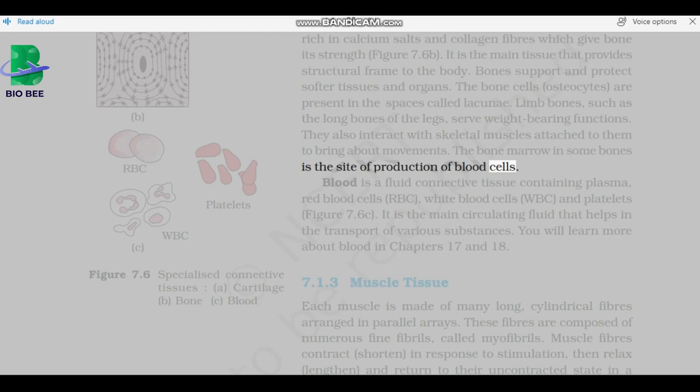Blood is a fluid connective tissue containing plasma, red blood cells, RBC, white blood cells, WBC, and platelets. It is the main circulating fluid that helps in the transport of various substances. You will learn more about blood in Chapters 17 and 18.